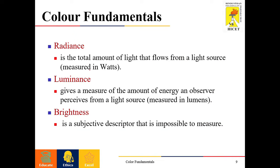There are three different terms: radiance, luminance, and brightness. Radiance is the total amount of light that flows from a light source and it is measured in watts. Luminance gives a measure of the amount of energy an observer perceives from a light source, measured in lumens. Brightness is a subjective descriptor and it is impossible to measure — it can vary from person to person.